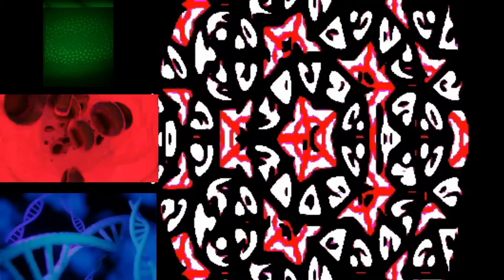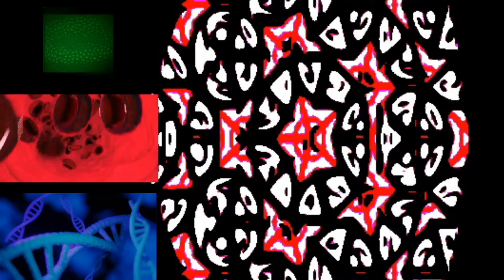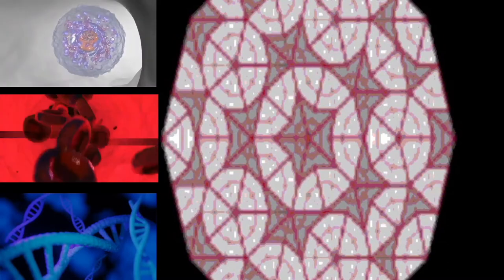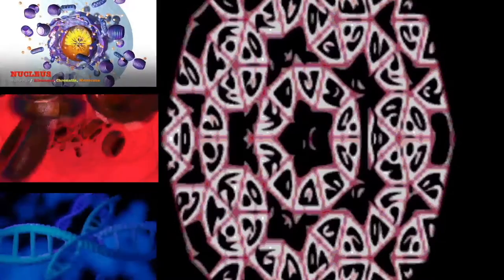Subsequently, proteins generally enter vesicles, which bud off from the smooth endoplasmic reticulum. In most eukaryotes, these protein-carrying vesicles are released and further modified in stacks of flattened vesicles called cisternae — the Golgi apparatus.